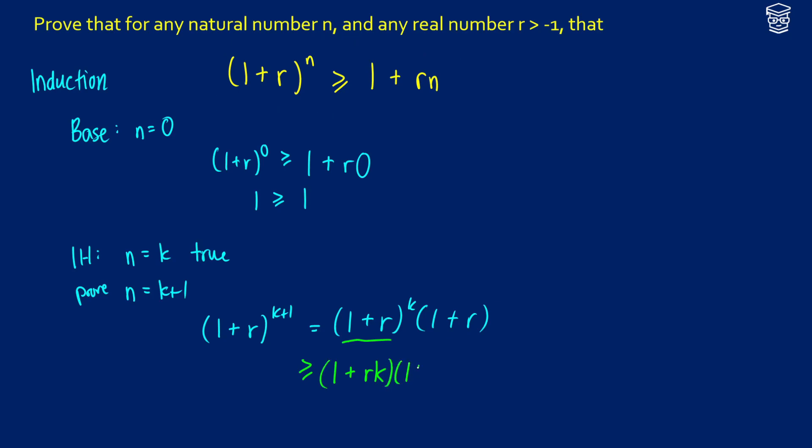But we still have to deal with the 1 plus r. So we're going to factor this out and expand it and see what happens. We're going to get 1 times 1 is 1, 1 times r is r, rk times 1 is rk, and rk times r is r squared times k.